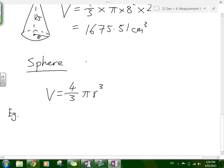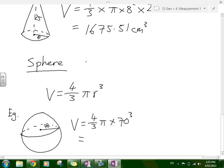Let's do an example. Let's say the radius of this sphere is 70. So V equals 4 over 3 π times 70 cubed, which is a very big number - 1,436,755.04 meters cubed. That's a big number.